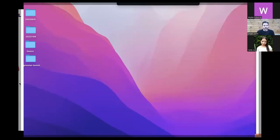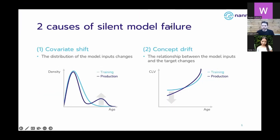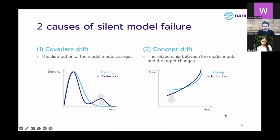There are, in general, two causes why a machine learning model can fail silently. One is covariate shifts, and the other one is concept drift. With covariate shifts, we typically mean the distributions of the model input changing over time.